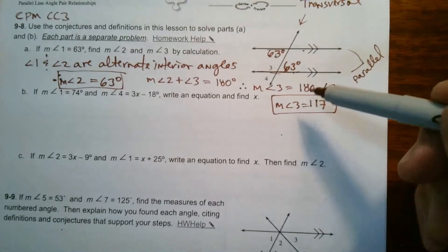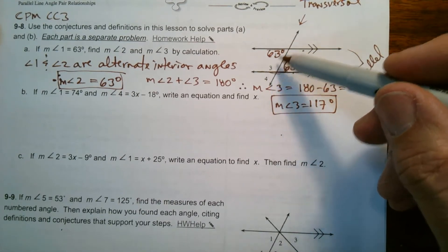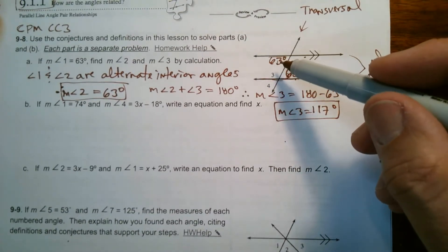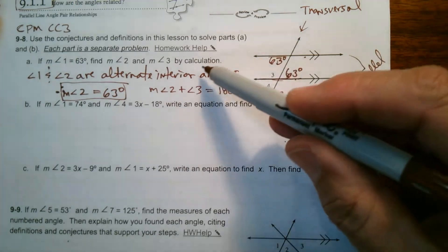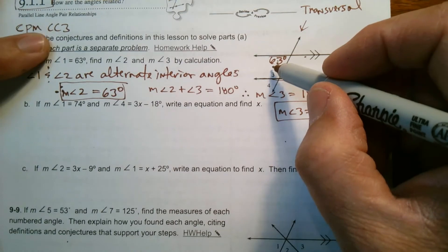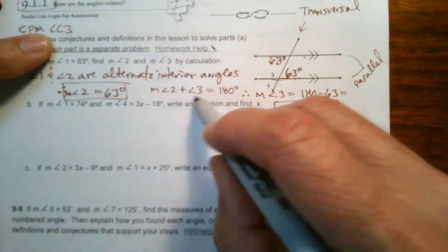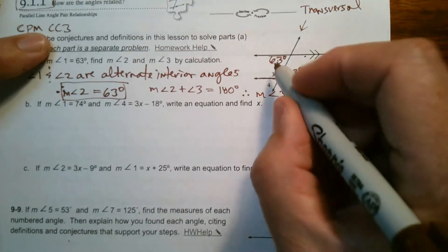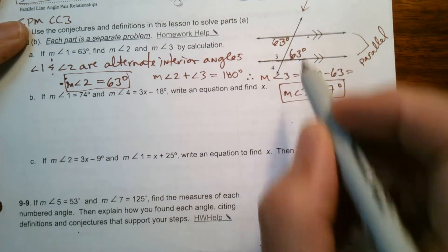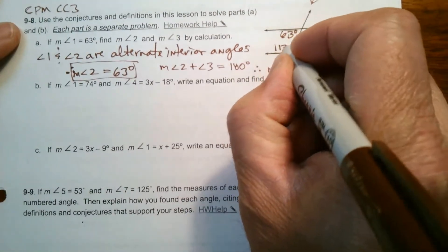We could also talk about angle 3 in relationship to angle 1. So these two have a name. Their name is the same side interior angles. Interior angles and they're same side. And we have a conjecture that says same side interior angles also add up to 180. So we could have also used the information of angle 1 plus angle 3 is 180. So that's 117.